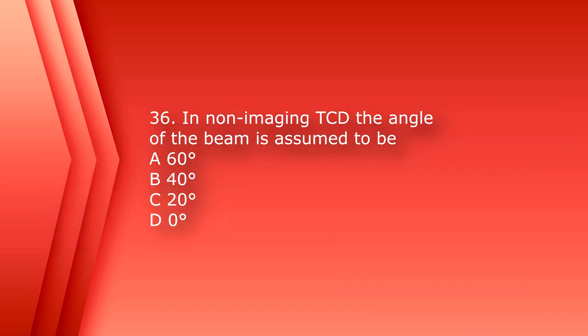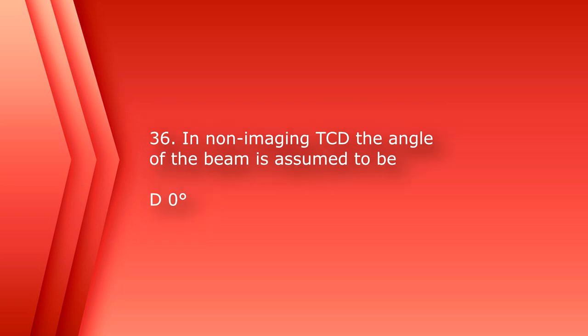Number 36: in non-imaging TCD, the angle of the beam is assumed to be A. 60 degrees, B. 40 degrees, C. 20 degrees, or D. 0 degrees. The answer is D, 0 degrees.